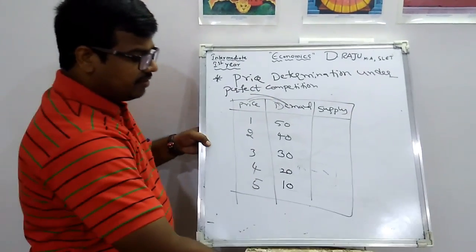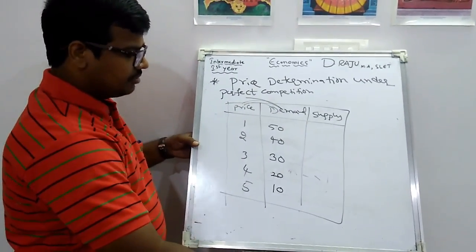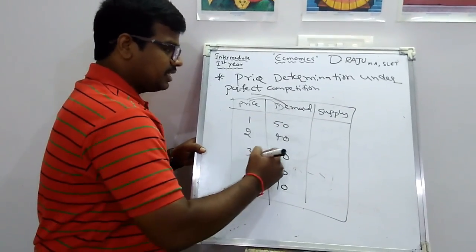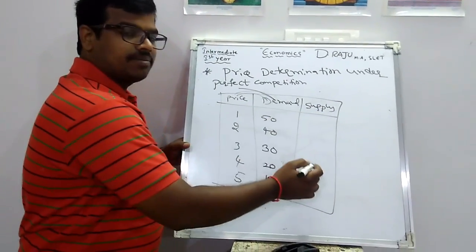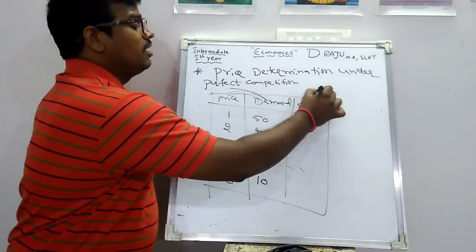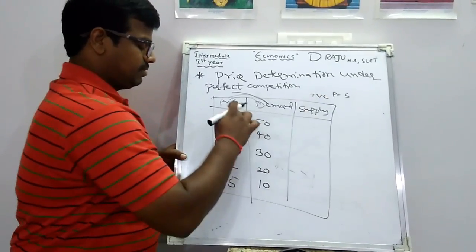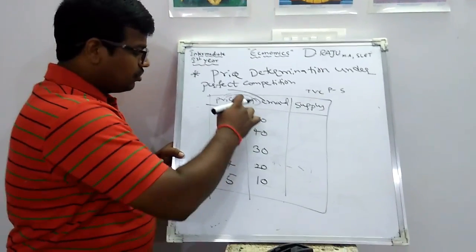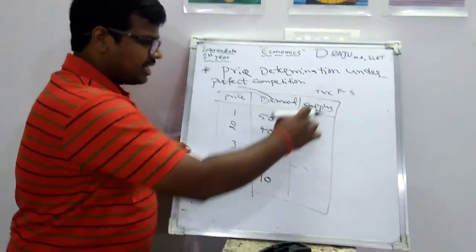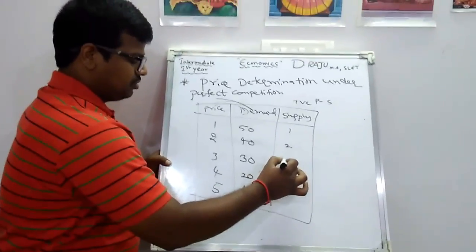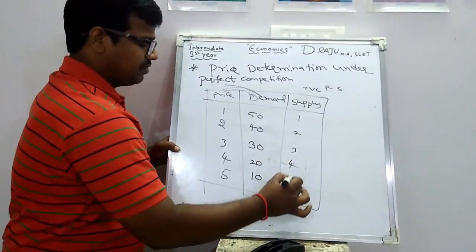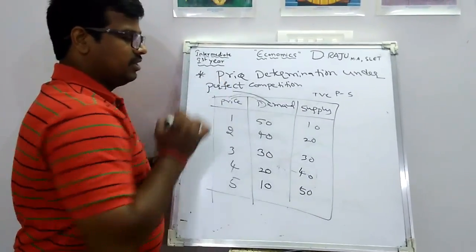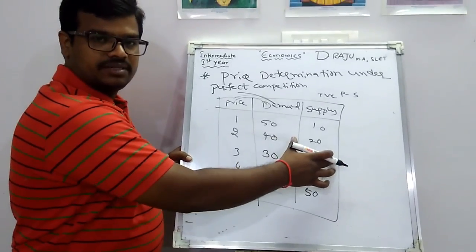For supply, as price increases, supply also increases because there exists a positive relation between price and supply. So supply is written in the same order as price: 10, 20, 30, 40, 50. This gives us the complete demand schedule and supply schedule.